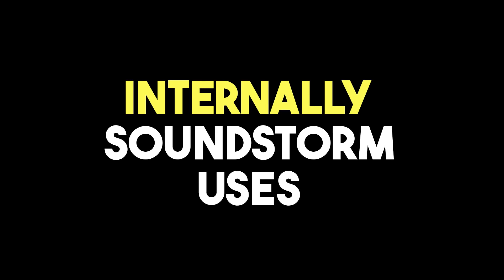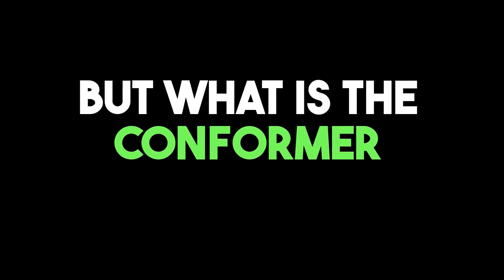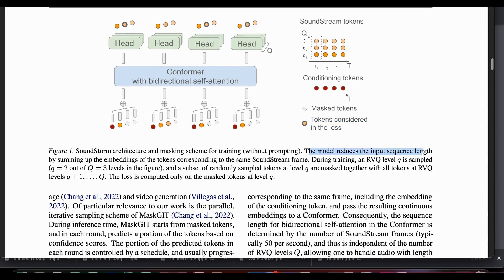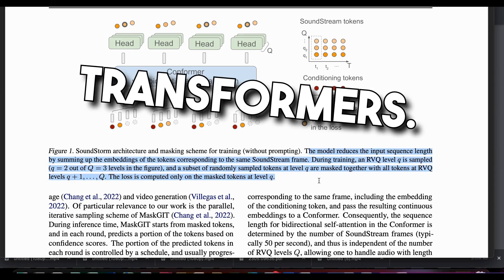Internally, Soundstorm uses a well-known bidirectional attention-based conformer architecture. The conformer, as the name suggests, combines elements from both convolutional neural networks (CNNs) and transformers to capture both local and global dependencies within a sequence. The conformer architecture incorporates convolutional layers to capture local patterns and positional information in the input sequence, helping model short-range dependencies. The model also includes self-attention layers of transformers.